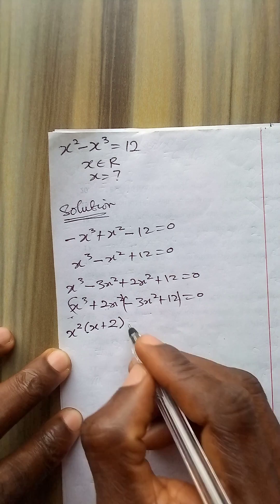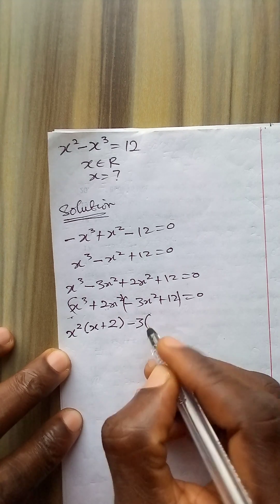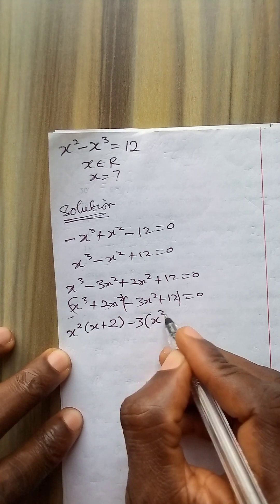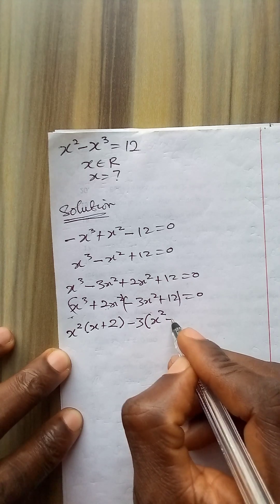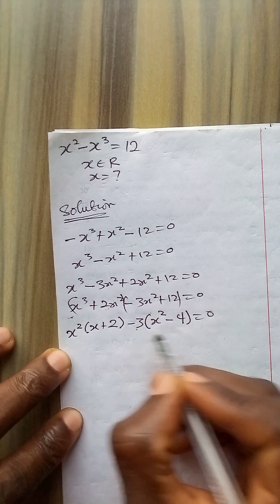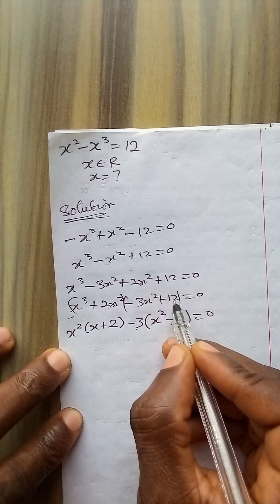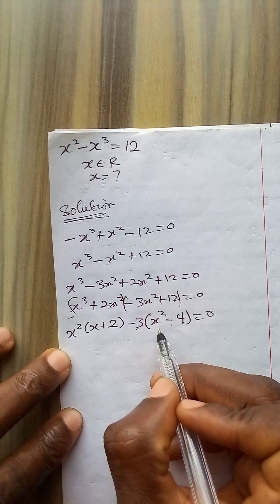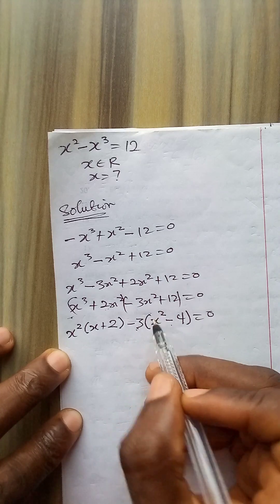Now in the second bracket, minus 3 is common, remaining x squared minus 4 equals 0, because minus 3 times minus 4 will give me plus 12 and minus 3 times x squared gives minus 3x squared.